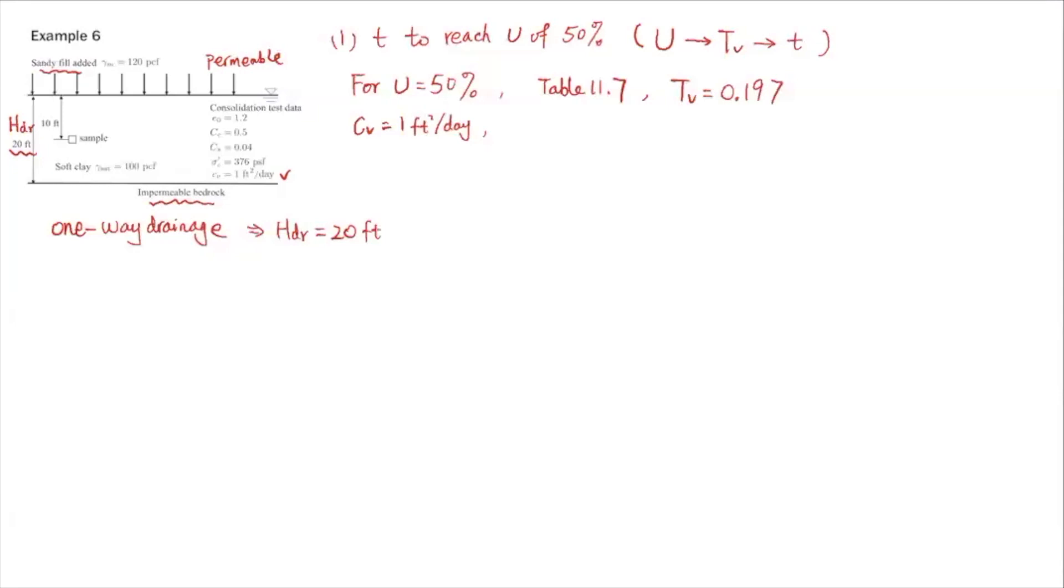Then we can calculate small t. Substituting all these values: 0.197, HDR is 20, Cv is 1. Since you're plugging in HDR in terms of feet and Cv in terms of feet squared per day, you're going to get days. So this is 78.8 days. That's the time it takes to reach 50% degree of consolidation, 78.8 days after the sandy fill is put on top.